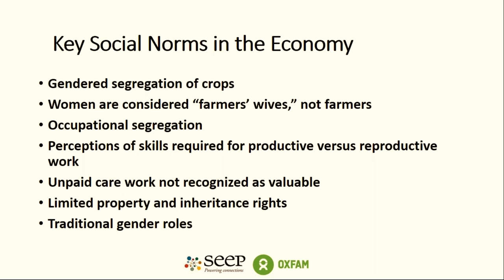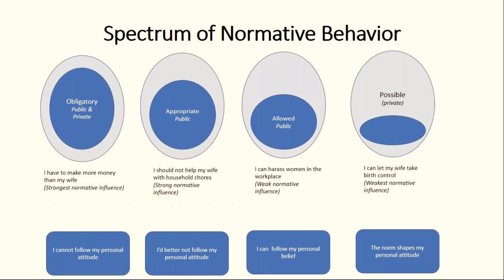Third, care work is not considered work — it's seen as leisure, petty, and low skilled. Fourth, women shouldn't work outside the home; men are not seen as good carers. Fifth, children and families suffer if a wife or mother works outside the home — something the Bangladesh team identified. Sixth, working outside the home is not safe for women; it's acceptable to harass women in public spaces. Seventh, it's difficult for working women to get married, and women who work in markets or the field become undesirable. Lastly, women are perceived not to have the same level of skills, competencies, and confidence as men.